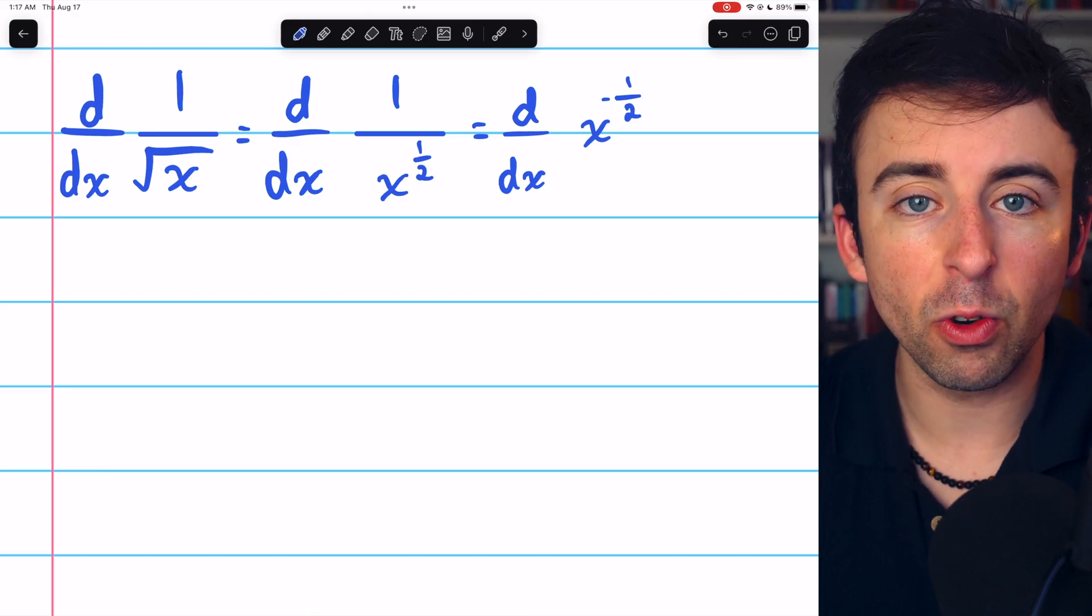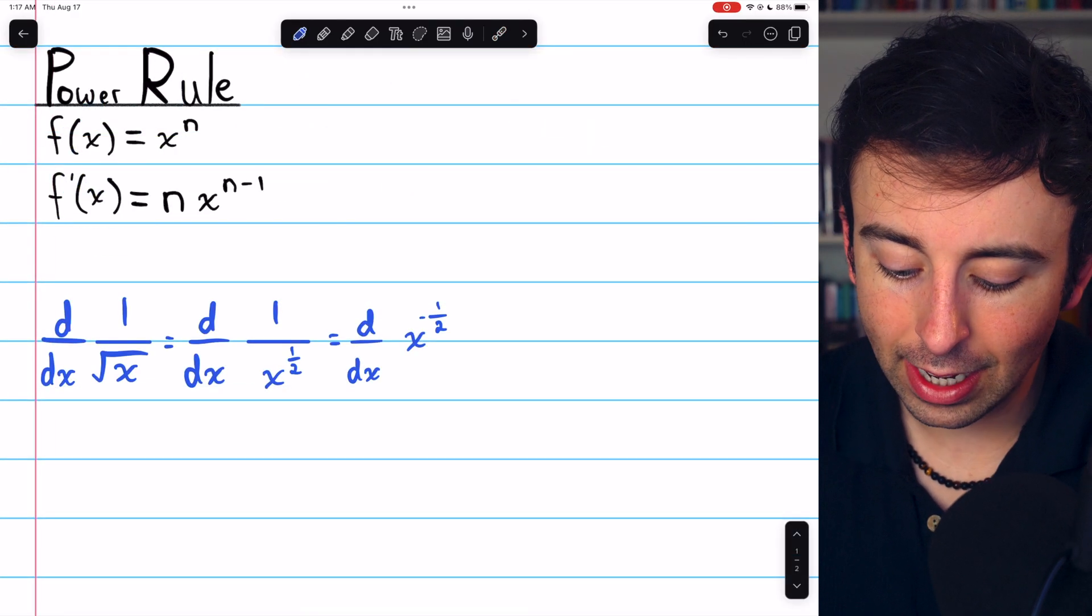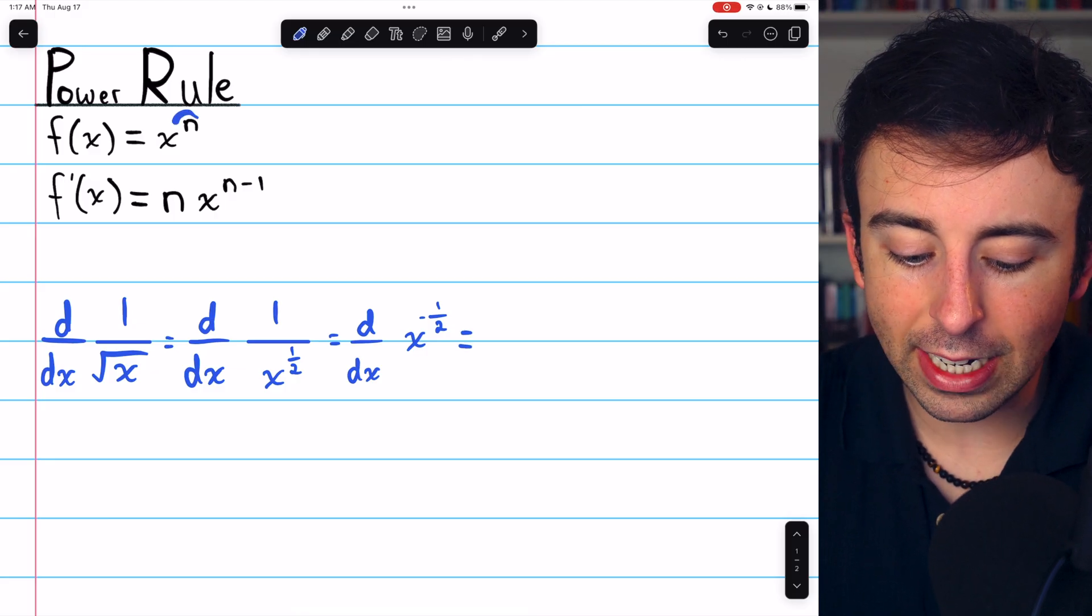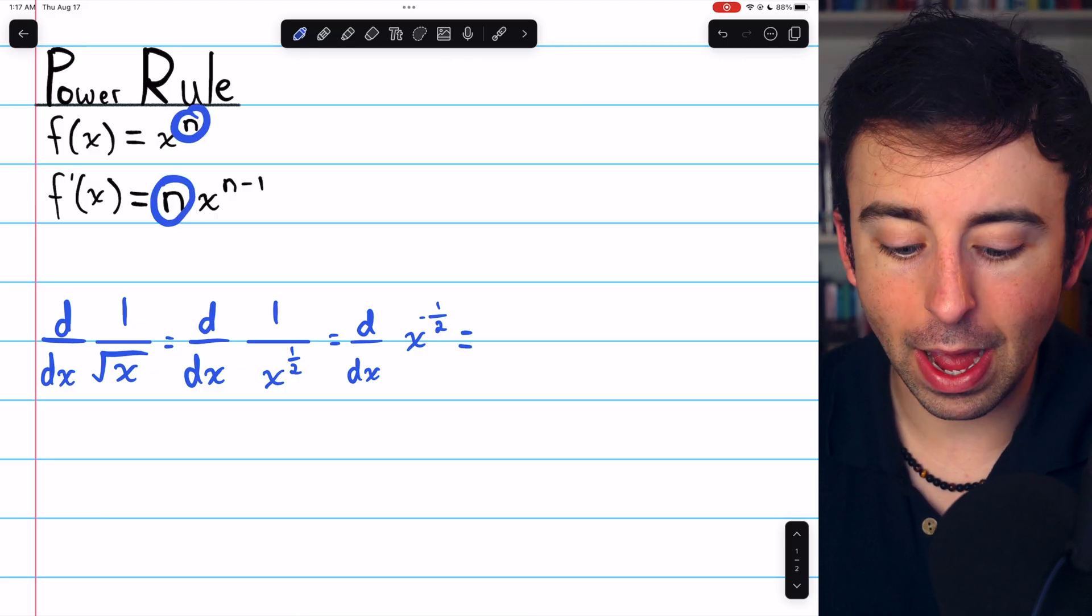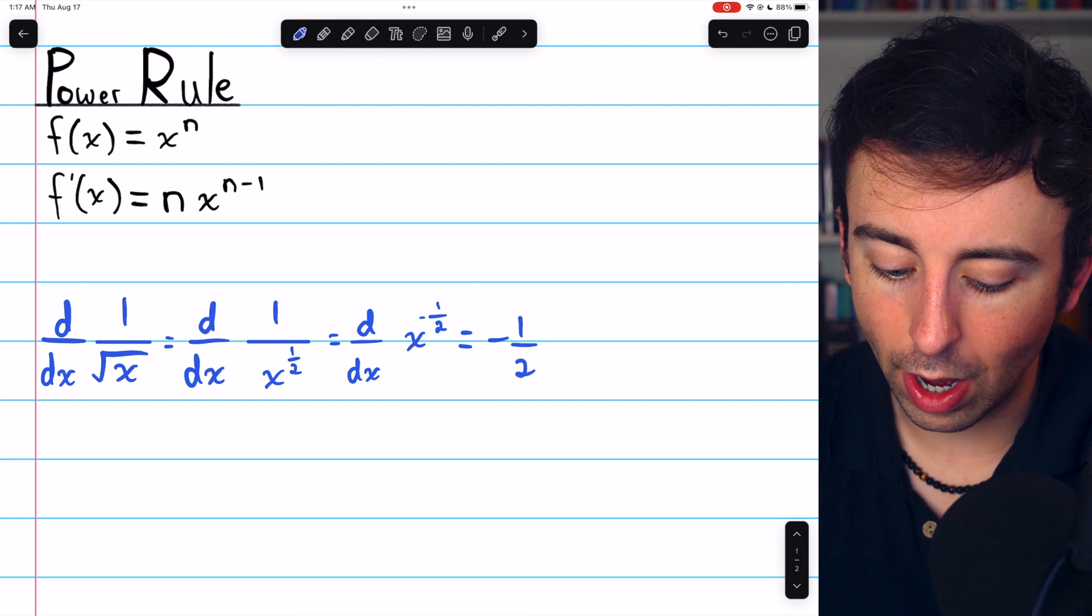At this point, it's obvious how to apply the power rule. Here is the power rule, in case you forgot. To take this derivative, we'll just need to multiply by the power. The power is negative 1 half, so we have negative 1 half.